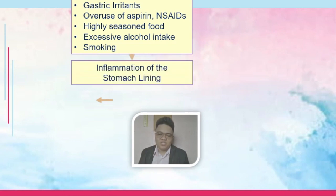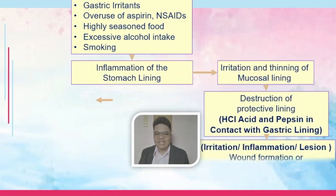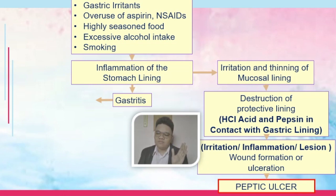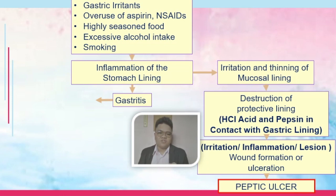Let's review the pathophysiology of gastritis. Gastric irritants — including overuse of aspirin and NSAIDs, highly seasoned food, excessive alcohol, and smoking — can all lead to inflammation of the stomach lining. Because of that inflammation, there will be irritation to the stomach and thinning of the mucosal lining, leading to its destruction. Normally, this mucosal lining is what protects our stomach from the acid it produces.